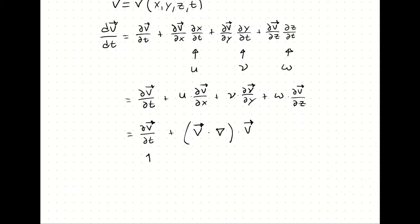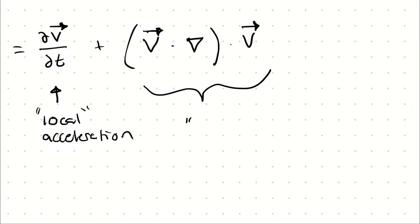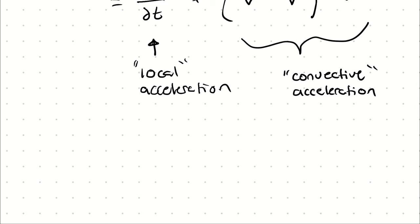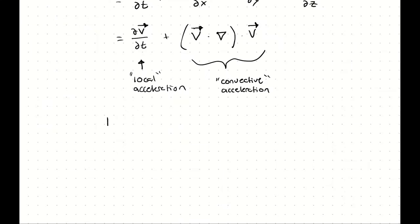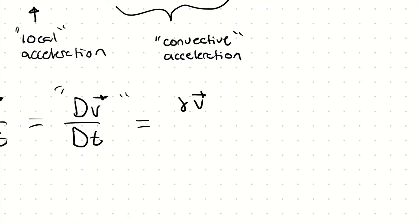In this acceleration expression, the first term — the partial derivative of velocity with respect to time — is what we call the local acceleration. The term on the right is what we call convective acceleration. That process can be abbreviated using an uppercase D, meaning we write this as the partial derivative of the velocity vector with respect to time plus the velocity vector times the gradient of the velocity vector.